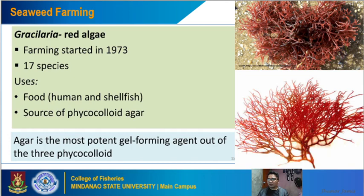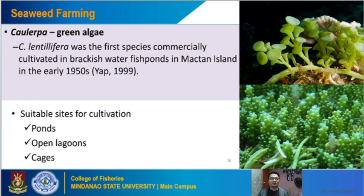In seaweed farming we also cultivate Caulerpa — specifically Caulerpa lentillifera, which was the first species commercially cultivated in brackish water fishponds in Mactan. This green algae is suitable for cultivation in ponds, open lagoons, or cages. Those are the different seaweeds that can be cultivated in our waters in the tropical regions.